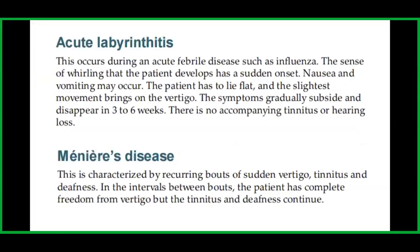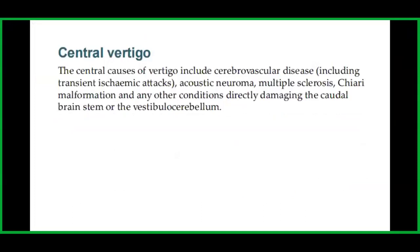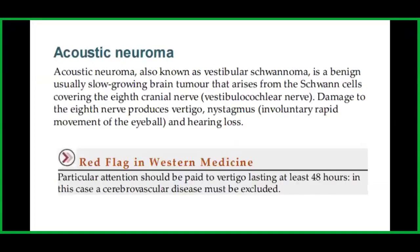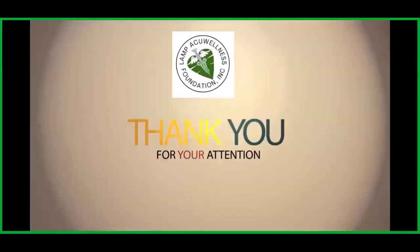Meniere's disease is characterized by recurring bouts of sudden vertigo, tinnitus, and deafness; in the intervals between bouts the patient has complete freedom from vertigo but tinnitus and deafness continue. Central causes of vertigo include cerebrovascular disease including transient ischemic attacks, acoustic neuroma, multiple sclerosis, Chiari malformation, and any other conditions directly damaging the caudal brain stem or the vestibulocerebellum. Acoustic neuroma, also known as vestibular schwannoma, is a benign usually slow-growing brain tumor arising from Schwann cells covering the eighth cranial nerve; damage to the eighth nerve produces vertigo, nystagmus, and hearing loss. The red flag in western medicine: particular attention should be paid to vertigo lasting at least 48 hours, in which case a cerebrovascular disease must be excluded.